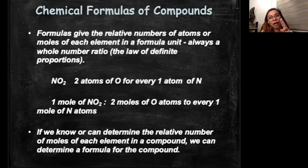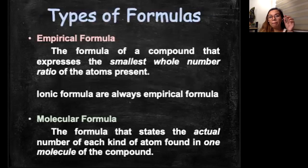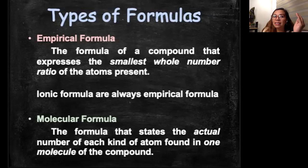And there are two types of formula. We have the empirical formula and the molecular formula. Empirical formula are always, what I mean here, ionic formula are always empirical formula. Formula of a compound that expresses the smallest whole number ratio of the atoms present.